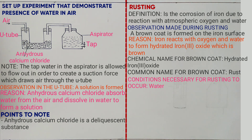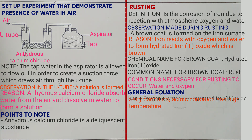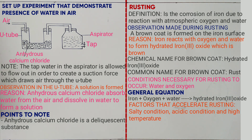The equation for the formation of the brown coat involves two equations occurring simultaneously. First: iron plus oxygen gives iron(III) oxide. Second: iron(III) oxide plus water gives hydrated iron(III) oxide. The general equation: iron plus oxygen plus water gives hydrated iron(III) oxide. The factors that accelerate rusting are salty conditions, acidic conditions, and high temperature.